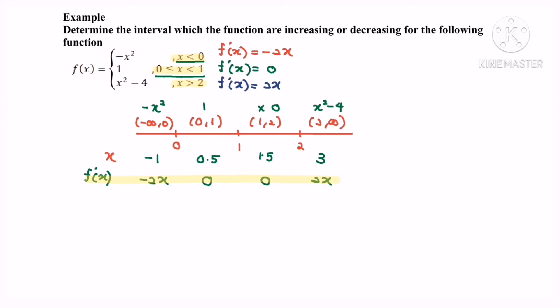Now substitute the test values to find the gradient for each interval. For the first interval, substituting x = negative 1 into negative 2x gives a positive value. For the second interval, the result is 0. For the third interval, the result is also 0. Finally, substituting x = 3 into 2x gives a positive value.